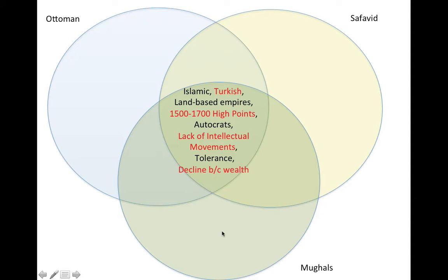All three of these gunpowder empires were Islamic, so their figurehead leaders were also religious leaders who used the faith to promote what they wanted. They were all of Turkish descent, meaning they came from Mongol-influenced Turkic roots. They were land-based empires, though the Ottomans also reached into the Mediterranean. They all had high points somewhere between 1500 and 1700, unfortunately followed by severe low points as the rise of Western Europe trumped them.